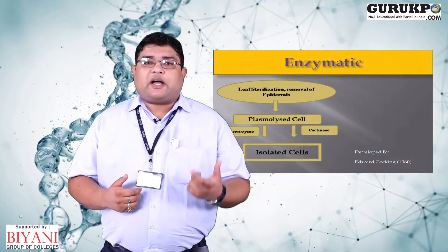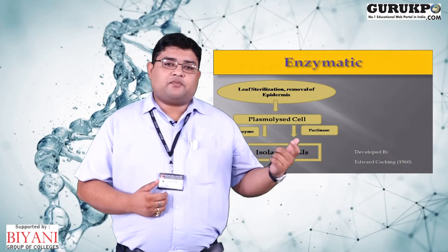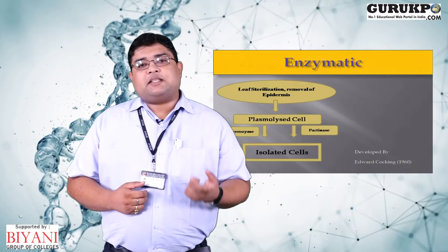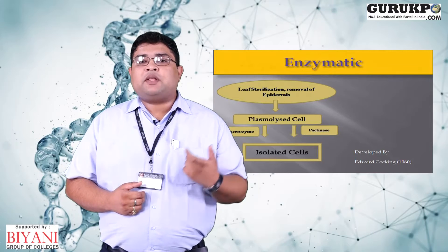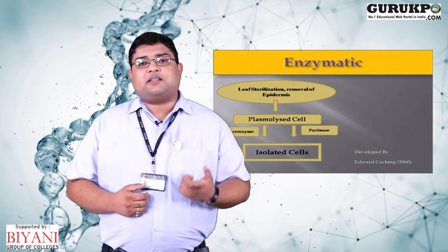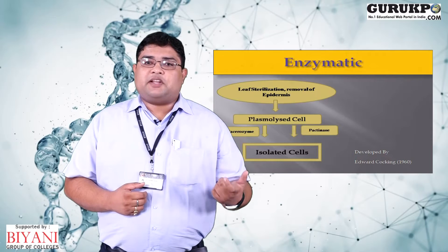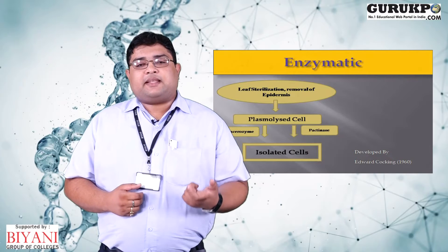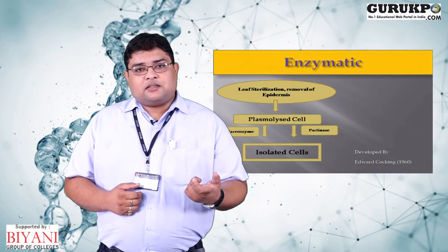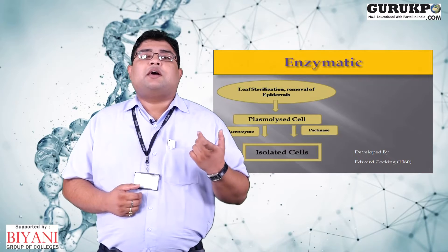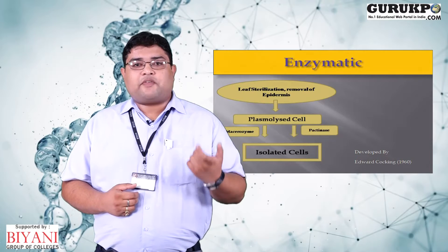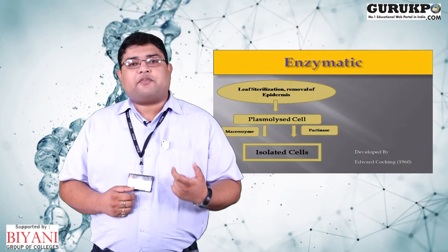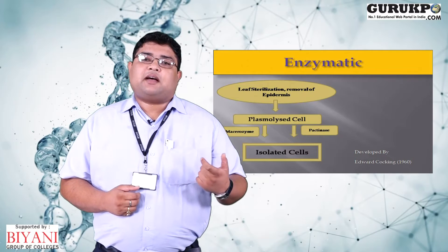These enzymes are used to isolate cells from juvenile leaves of in vitro or in vivo growing plants. Initially, the plant leaf explants are taken out, surface sterilized, and enzymatic treatment is provided for around 35 to 45 minutes to the leaf cells. The mixture is then centrifuged for five minutes so that the isolated cells form a pellet and can be easily separated using the liquid culture media.